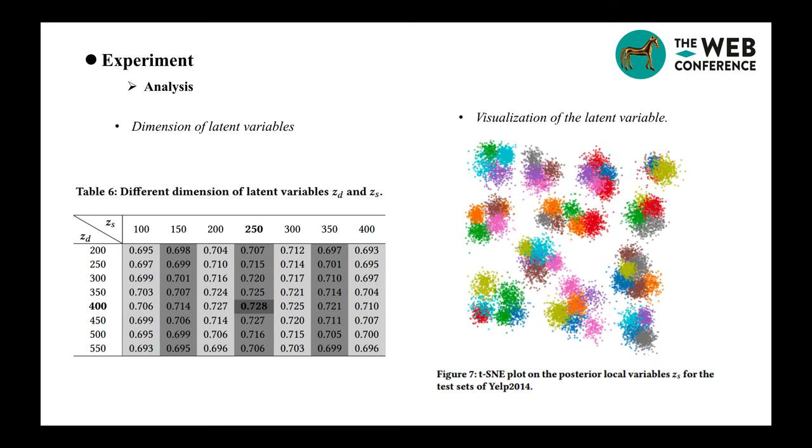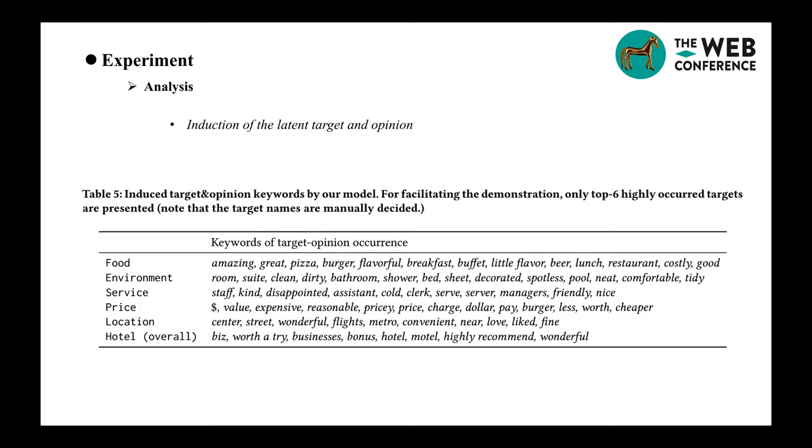We also show some latent targets and opinion keywords induced by our model. We find that those induced keywords are the aspect-opinion expressions, which are all the strong clues for directly indicating the corresponding targets. This validates our model's superiority.